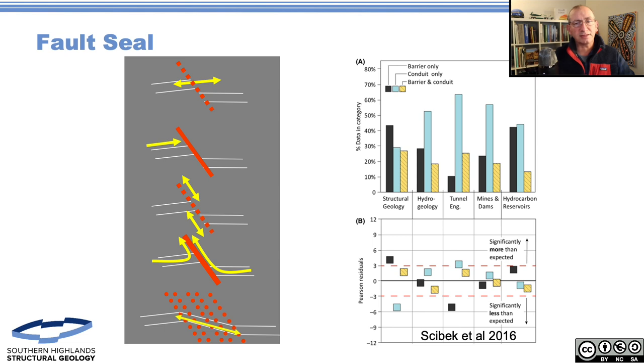There's a really nice study that Scribic and colleagues put together. They looked at the assertions within papers - they haven't looked at validity, just what the paper talks about. Does it talk about fault leaking or sealing?